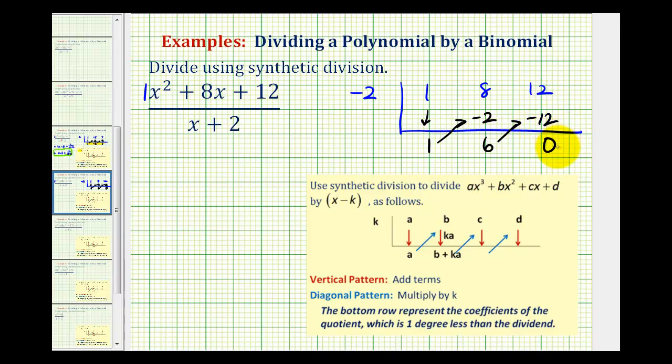In this example, the remainder would be zero. But again, because we have a degree two polynomial divided by a degree one binomial, and two minus one is equal to one, this would be the coefficient of the degree one term. This is our constant, and this is our remainder.